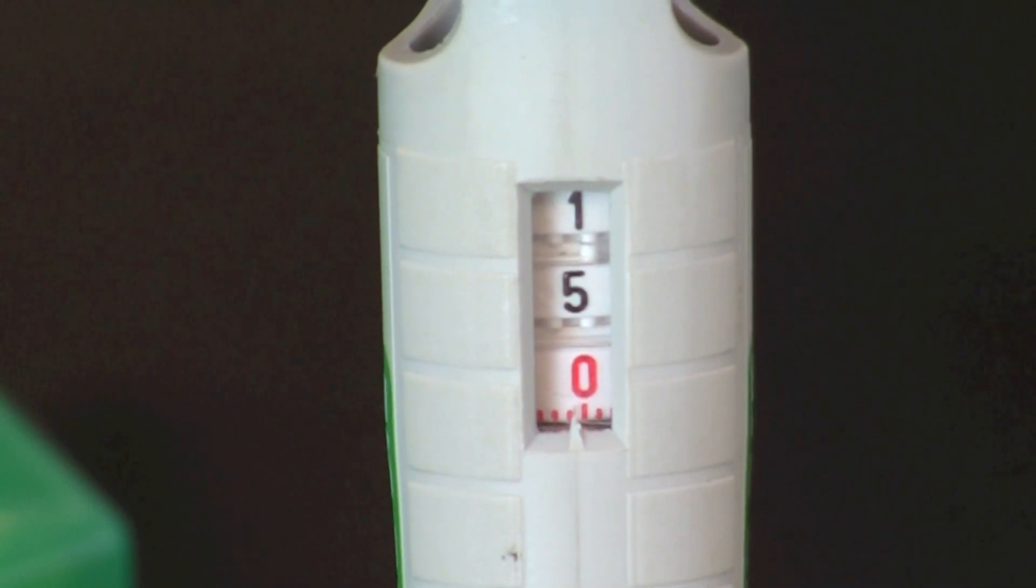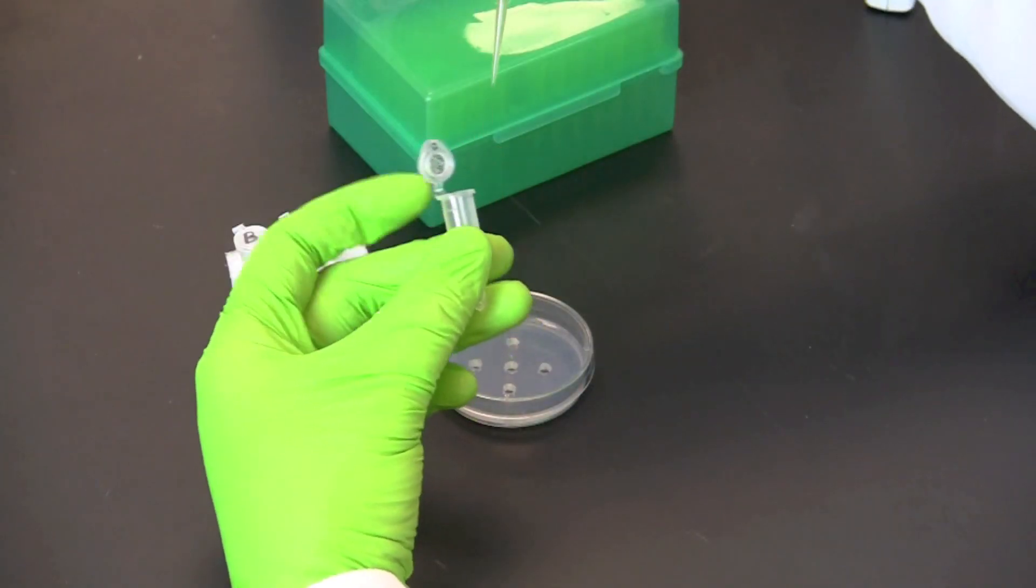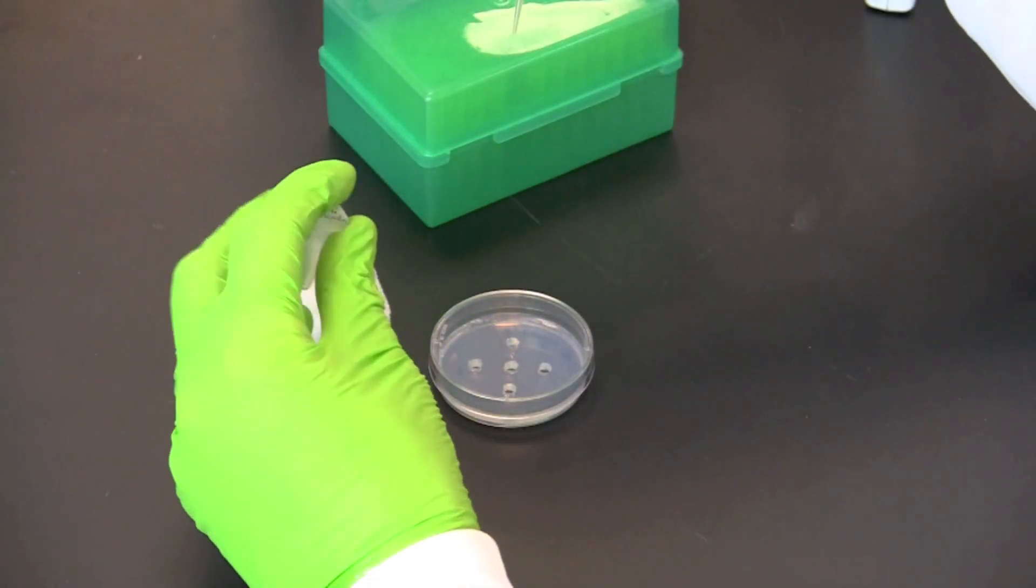Set a micropipette to 15 microliters and pipette 15 microliters of anti-chicken antibodies into the center hole.